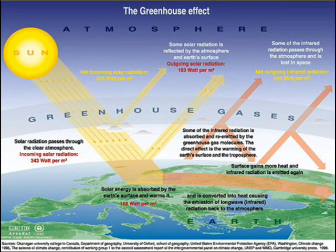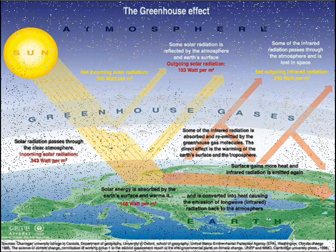The planet's atmosphere contains greenhouse gases. Solar radiation passes through the gases and warms the surface of the Earth. When heat rises from the surface, some of it is able to pass through the gases, but some of it remains in the atmosphere, adding to the overall temperature.